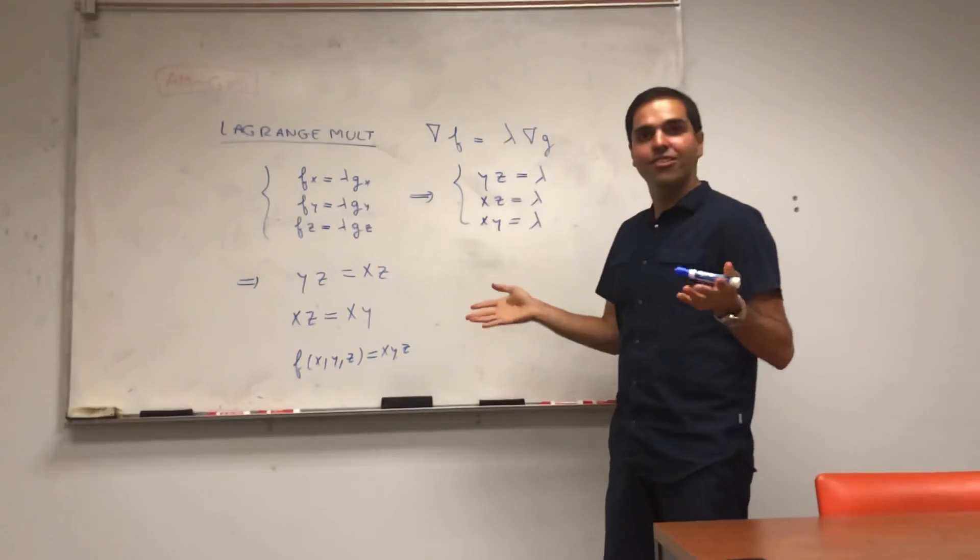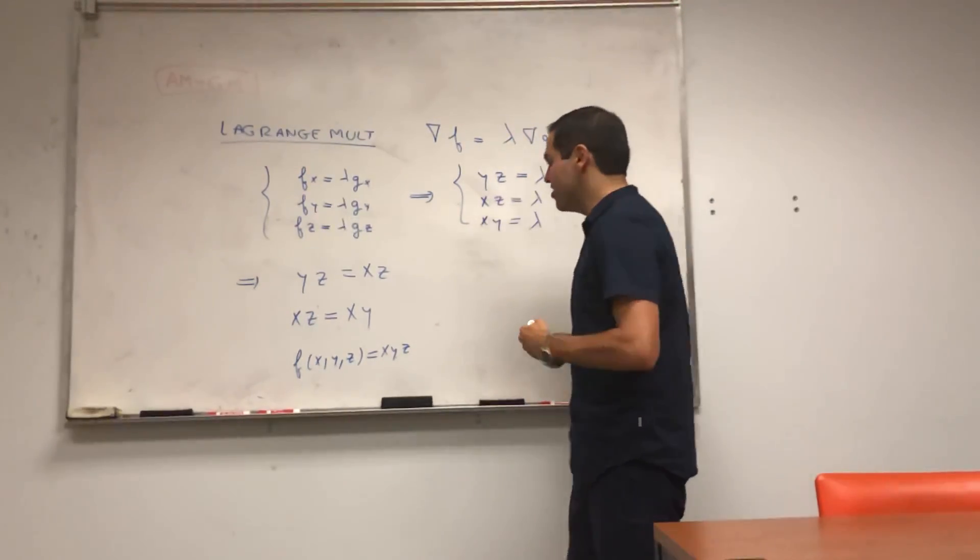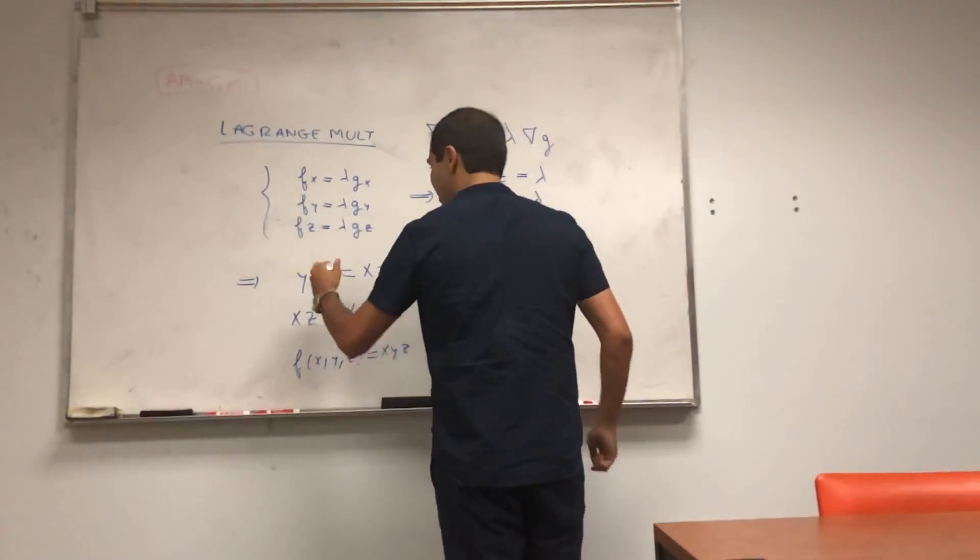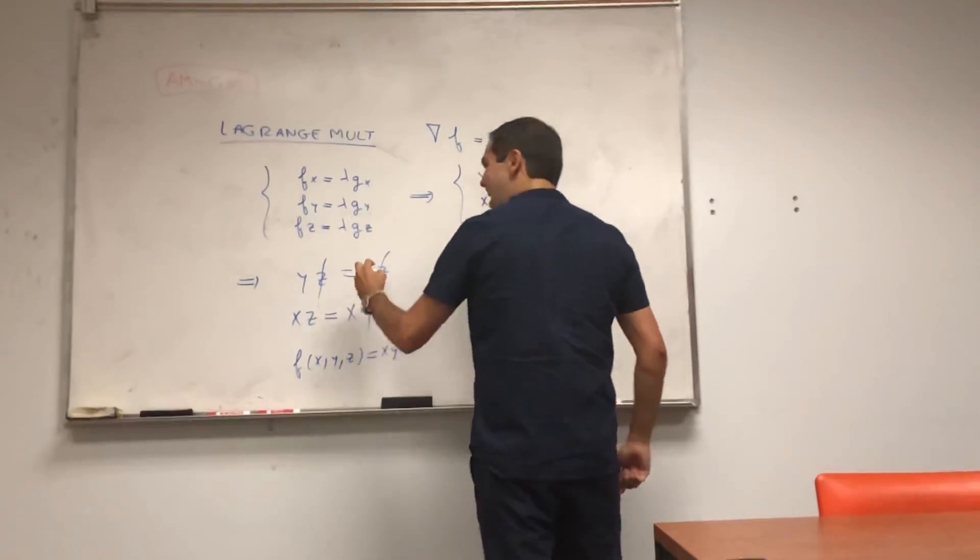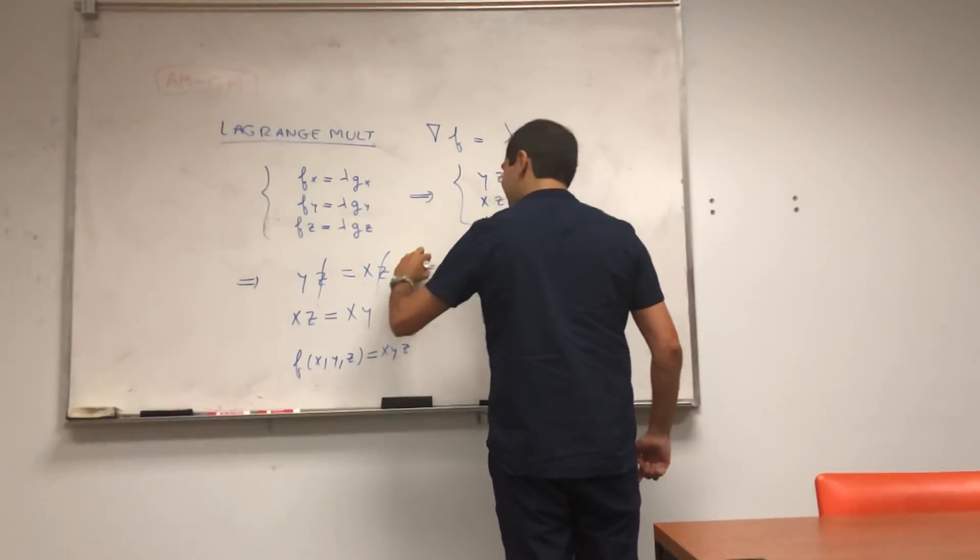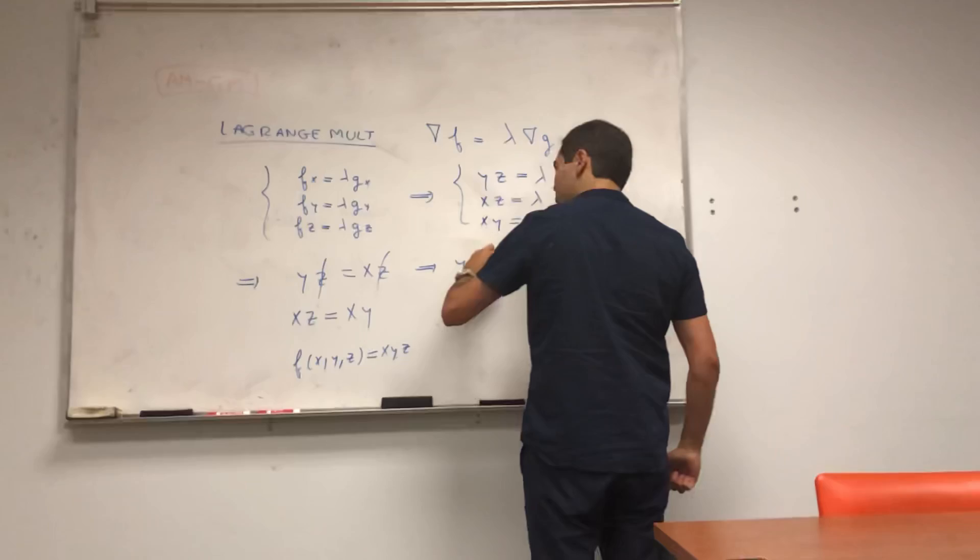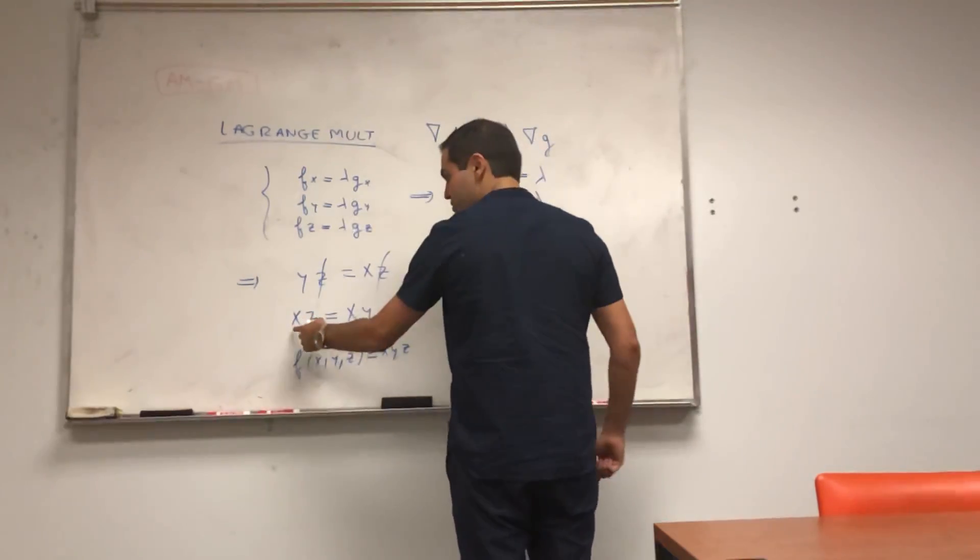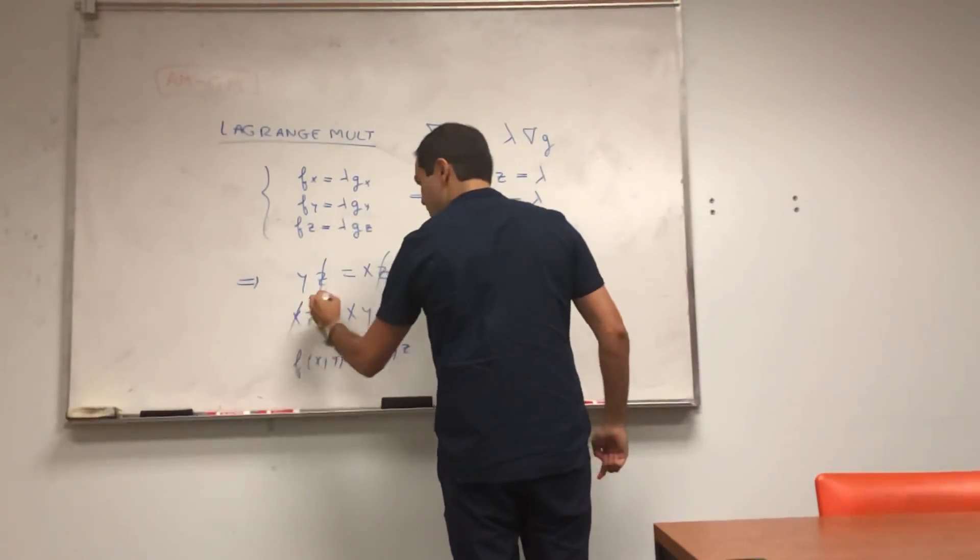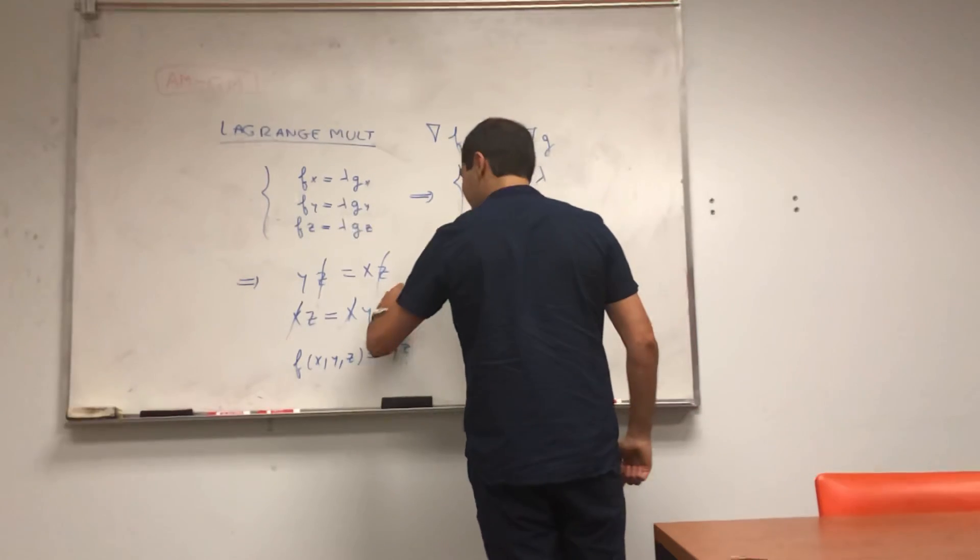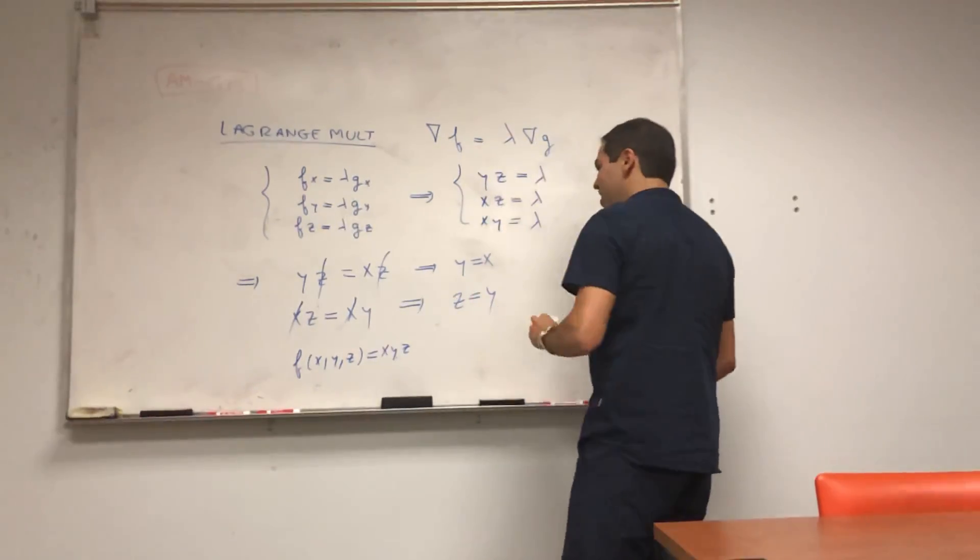And maybe I forgot to mention that constant c is greater or equal to zero. So we can do that, which means now, bang, bang, we can cancel that out. Y equals to x. And also similarly, here, bang, bang, cancel the x out, and we get z equals to y.